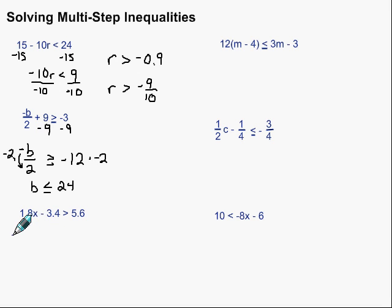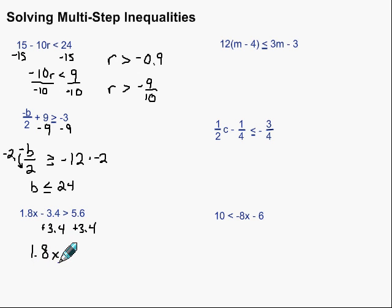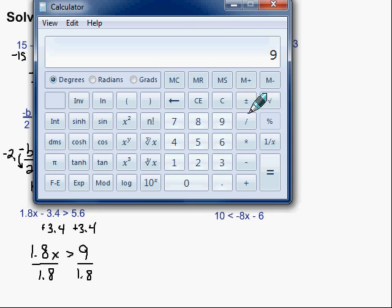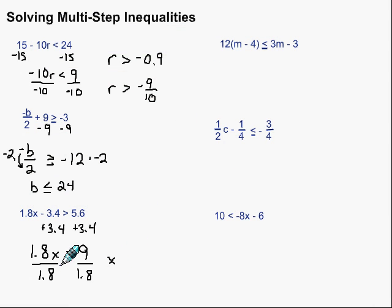Let's take a look at this next one. We again want to get our variable by itself. Let's start by getting rid of this minus 3.4 — the opposite is plus 3.4, so we add 3.4 to both sides. Bring down what we have: 1.8x is greater than 5.6 plus 3.4, which gives us 9. Then we divide by 1.8 on both sides. 9 divided by 1.8 — don't hesitate to grab a calculator — gives us 5. In this case, we didn't divide by a negative, so we don't flip the symbol. We have x is greater than 5.